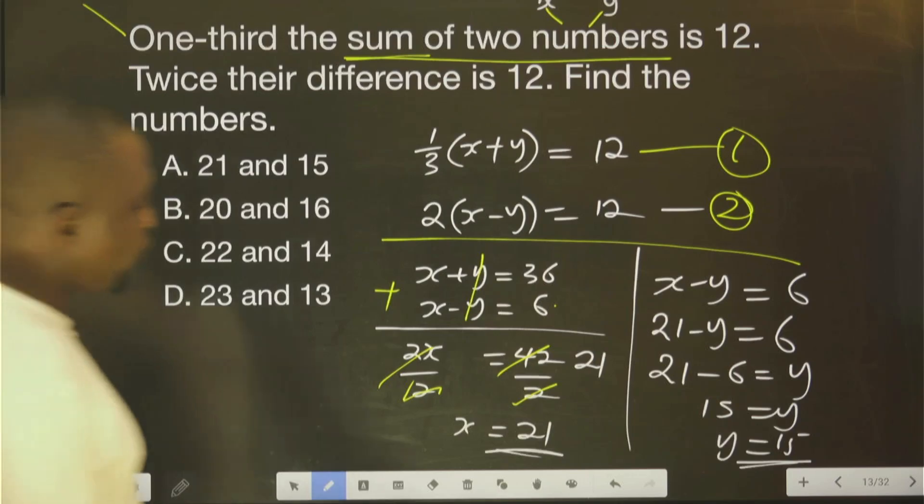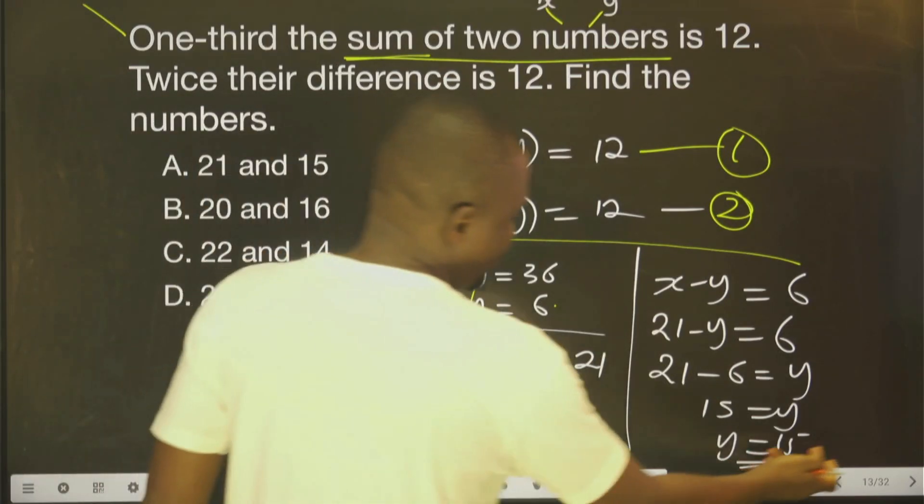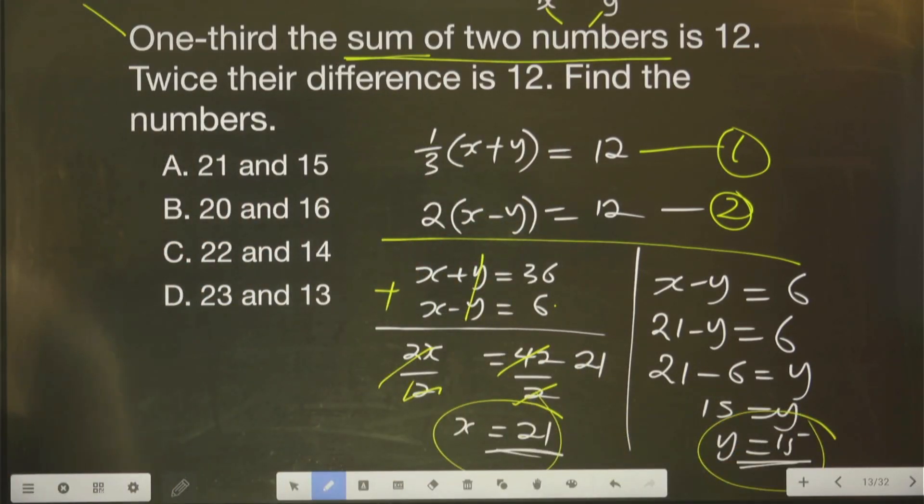So as you can see, we have the two values for S and also for Y. So therefore, that is 15 and 21. 21 and 15. That is A.